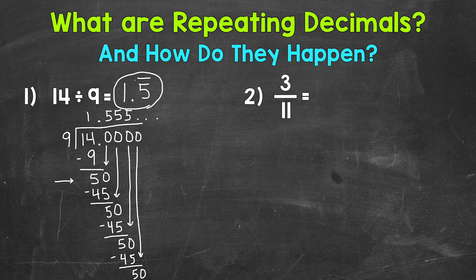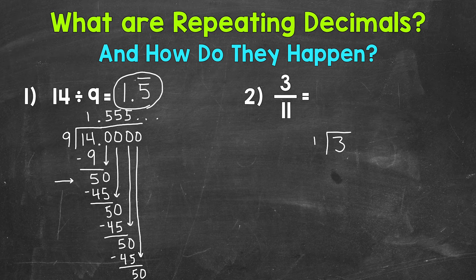Let's do another example and move on to number 2, where we have 3 elevenths. We're going to take that fraction and convert it to a decimal by using division — so we do 3 divided by 11. We start by seeing how many whole groups of 11 we can pull out of 3. Well, we can't do that, so let's put a zero there.